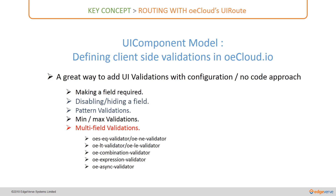The OE async validator is used when some validations are dependent on additional data from the server — it fetches that data and you make decisions based on it. These are the different client-side validations that can be attached to a UI component model, making it very powerful for rendering custom forms. Having understood the range of capabilities of the UI component model, let us now do a code review of a UI component for the product model.